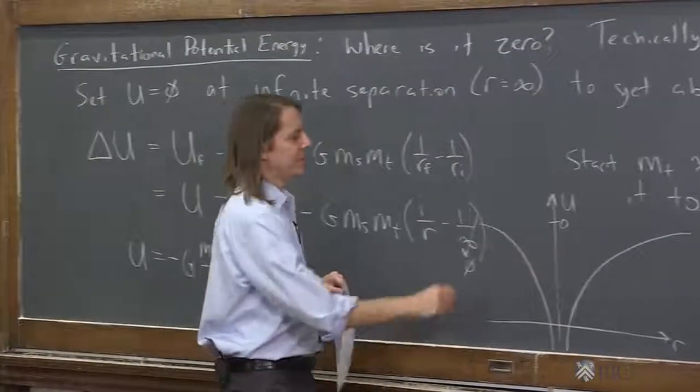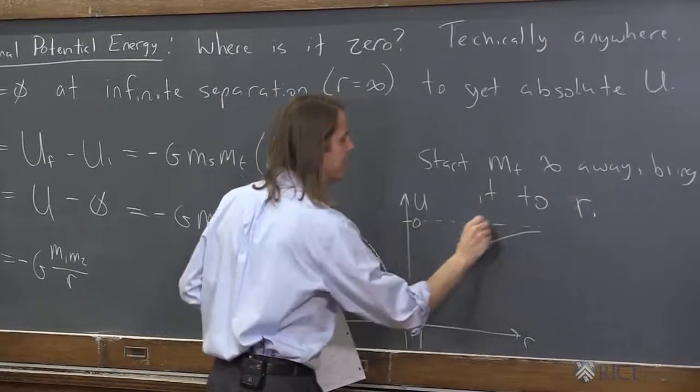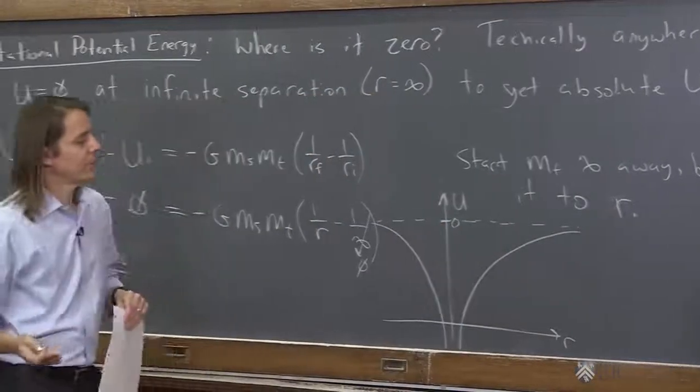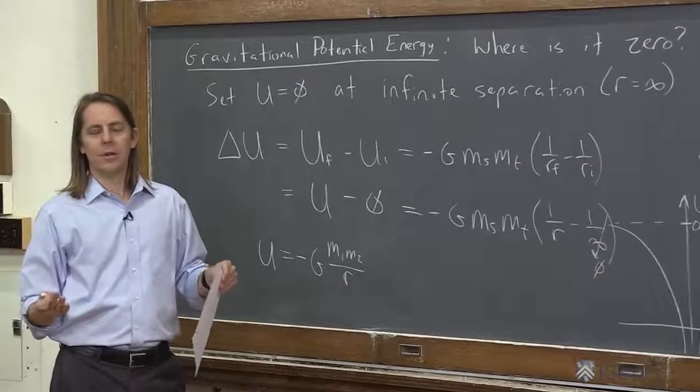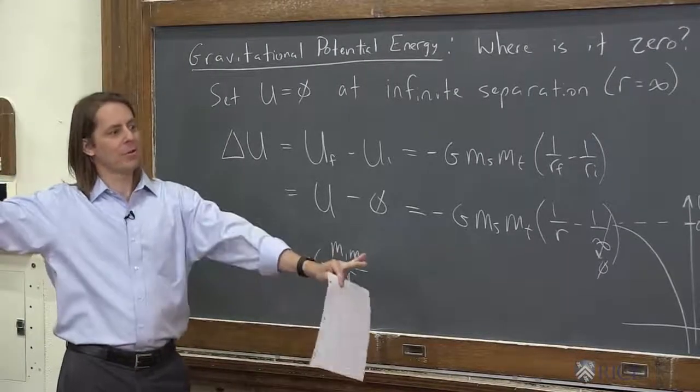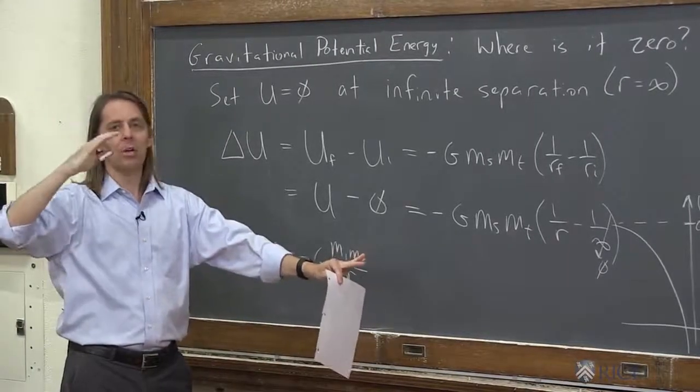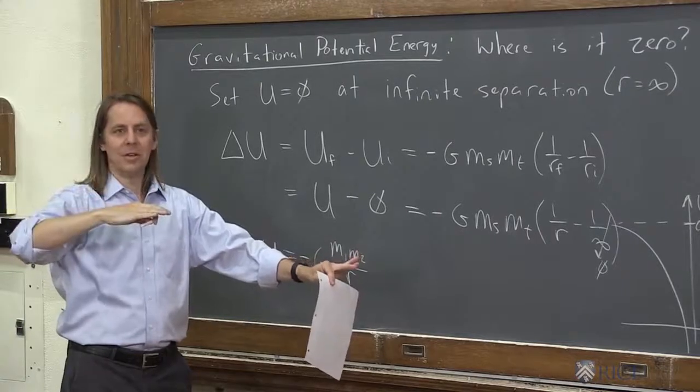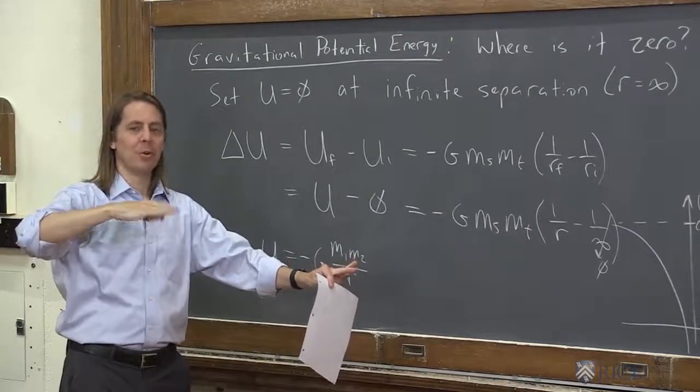It's always negative because gravitational interactions are always attractive. So wherever in the universe you are, if there's a mass there and you move towards it, you're going to lower gravitational potential energy. You can only raise your gravitational potential by moving away from something.